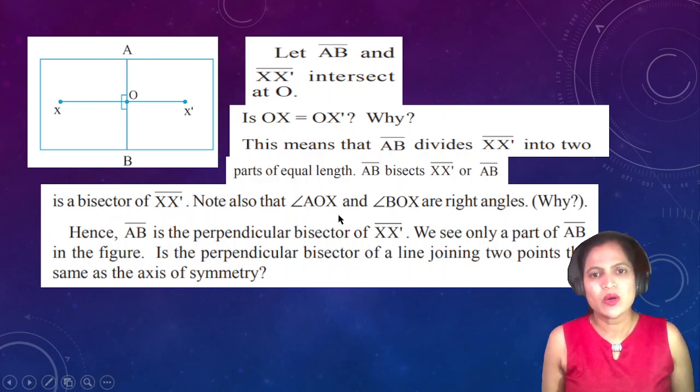Note also that angle AOX and angle BOX are right angles. Even these two angles are right angles. Why? Hence, AB is the perpendicular bisector of XX'.